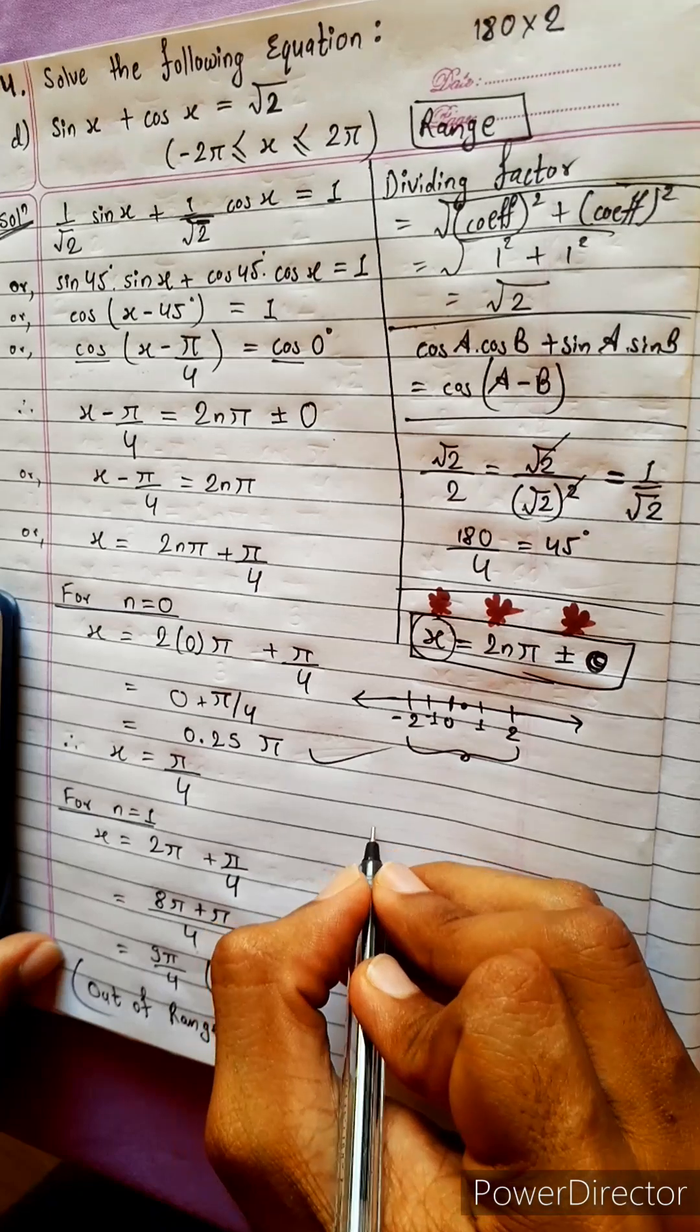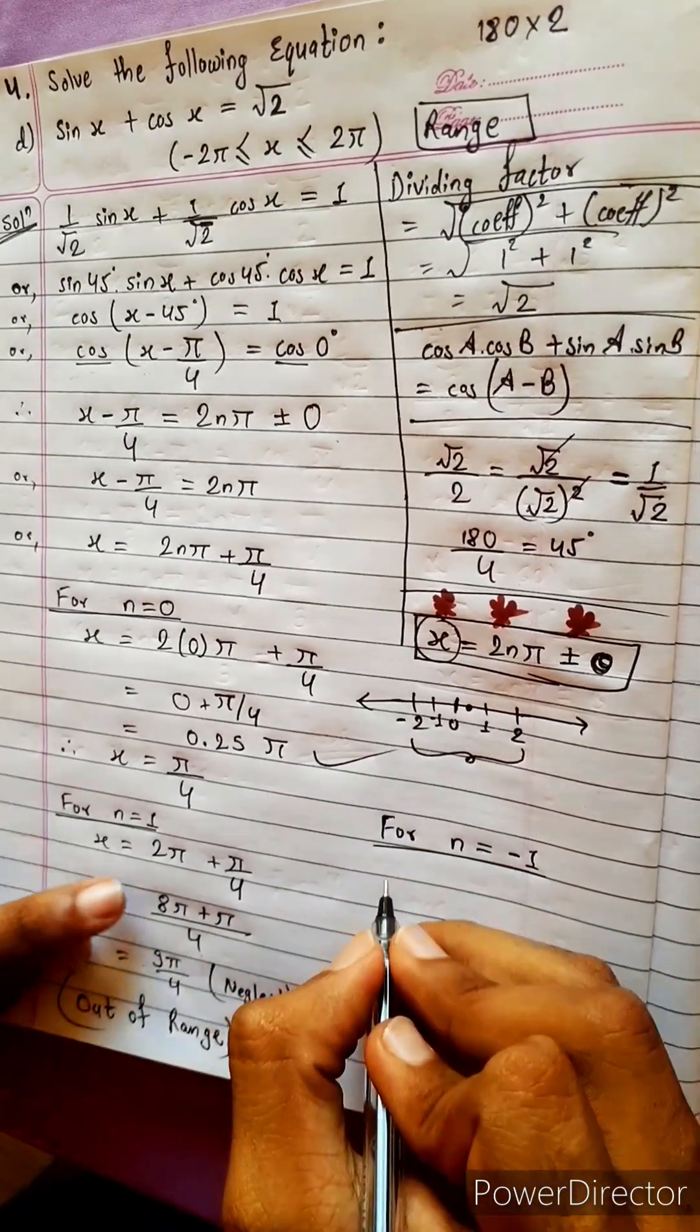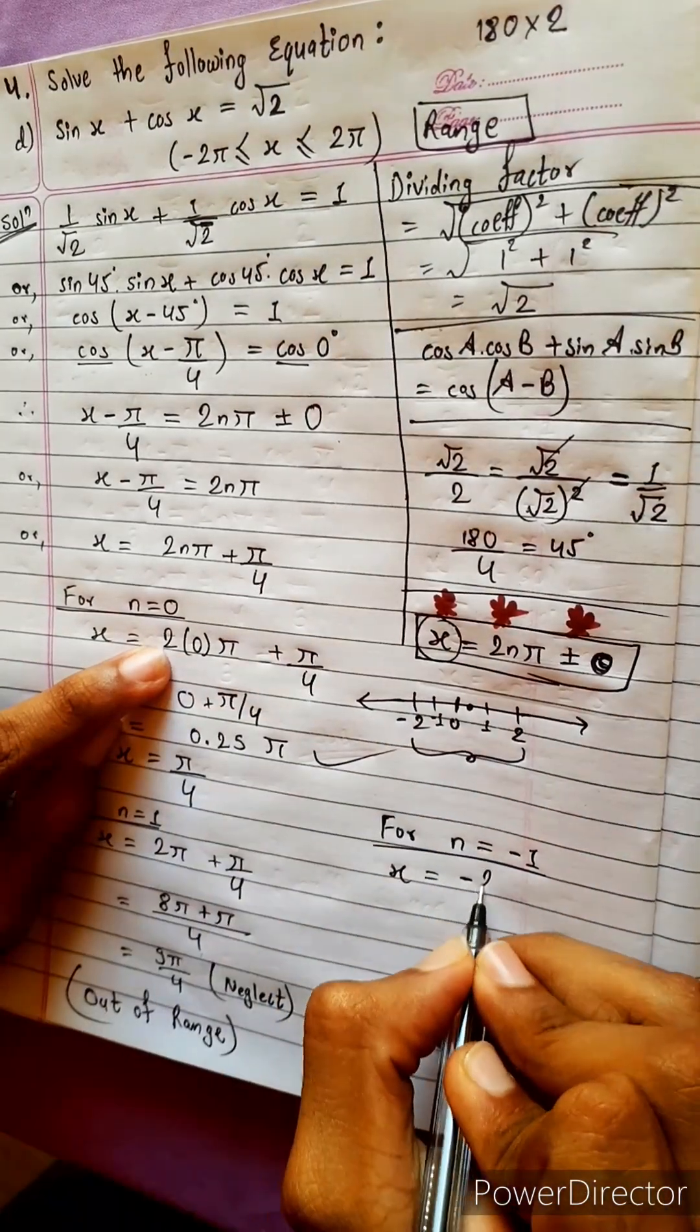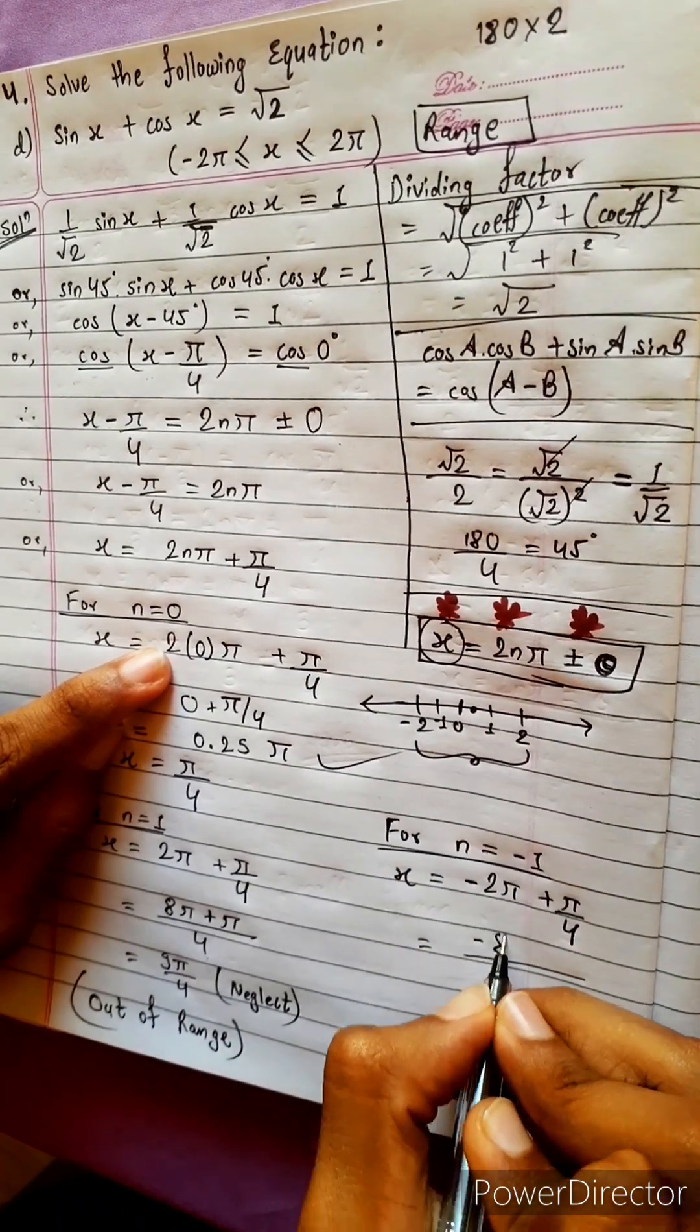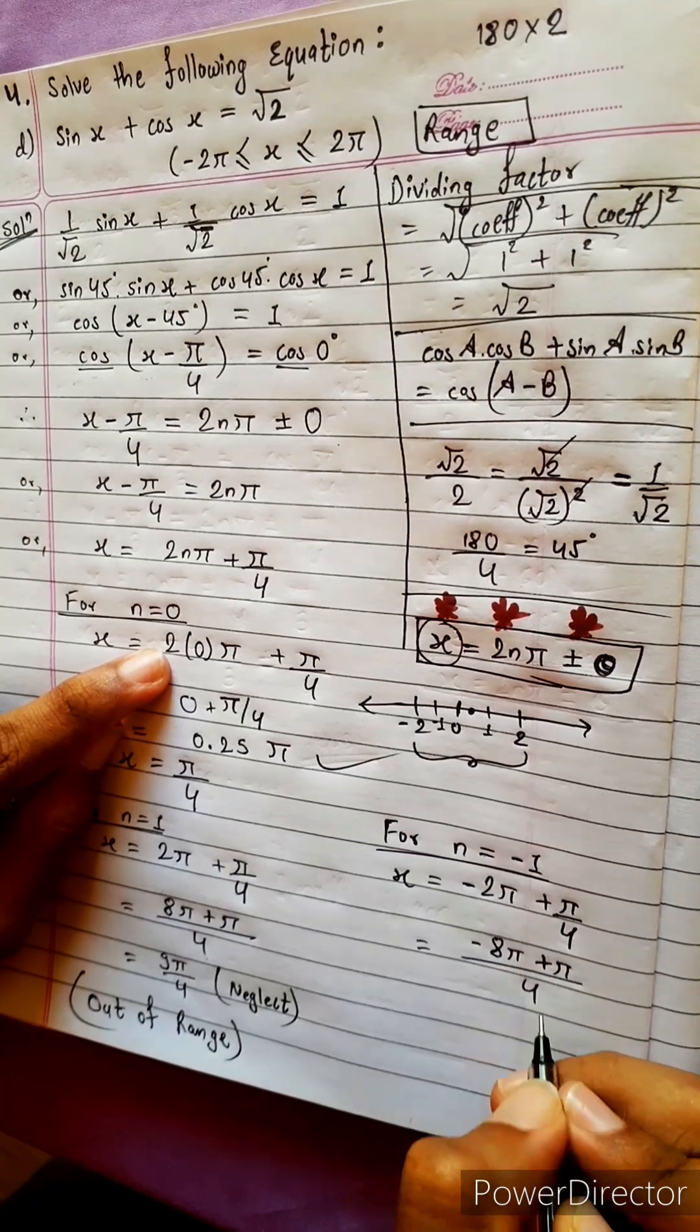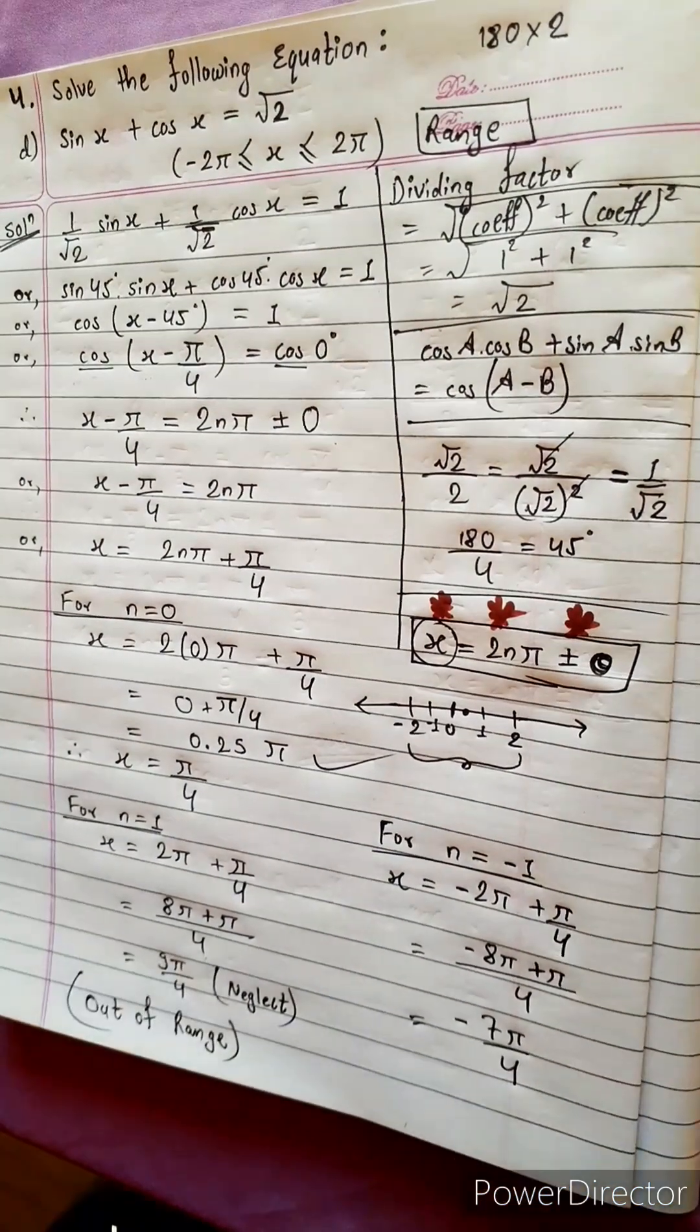Now let's check for n equal to minus 1. For n equals minus 1, x equals to 2 into minus 1 means minus 2 pi plus pi by 4. We will get minus 8 pi plus pi by 4. Now this will be minus 7 pi by 4. How much is 7 by 4?